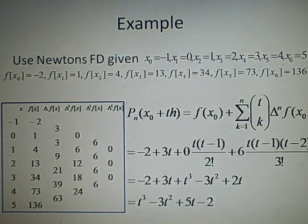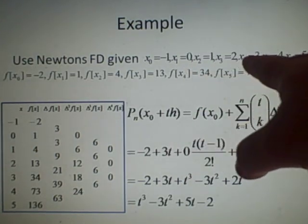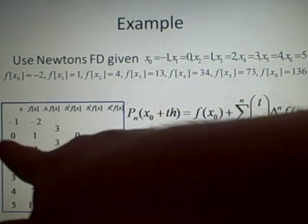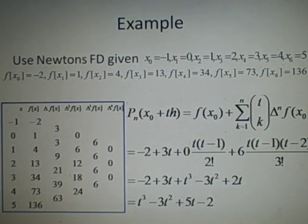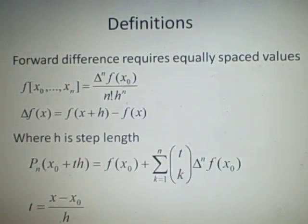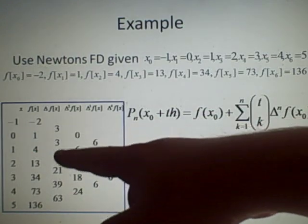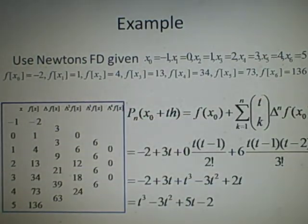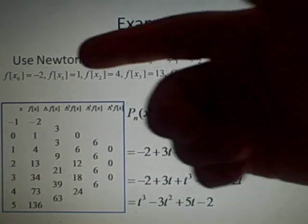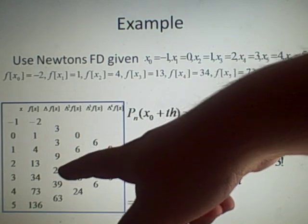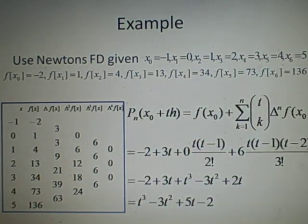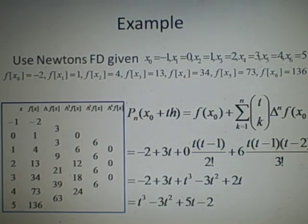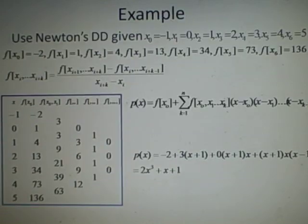We use the same example: x values -1, 0, 1, 2, 3, 4, 5 with f values -2, 1, 4, 13, 34, 73, 136. We compute the difference table — it's simpler than it looks. You just find the difference between consecutive values: for example, 34 minus 13 is 21, and 21 minus 39 is... well, going backward would give minus 18, so it's the forward difference.